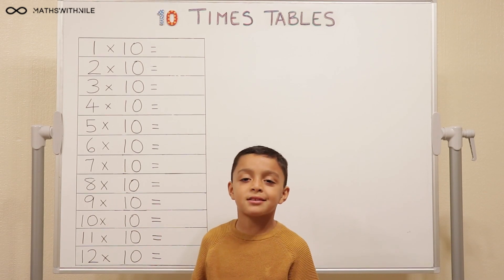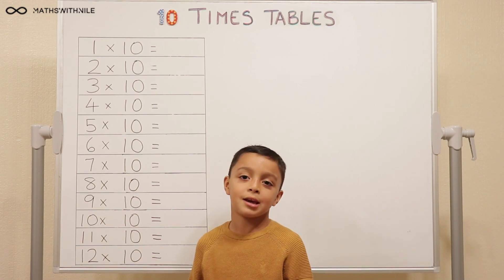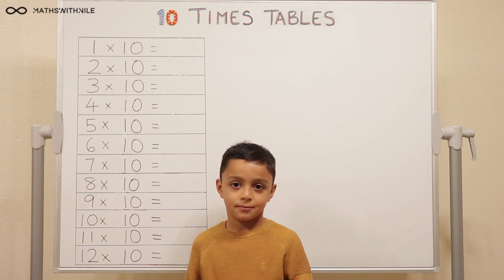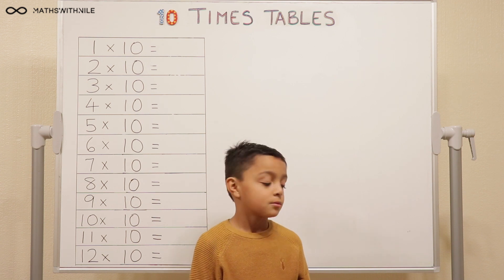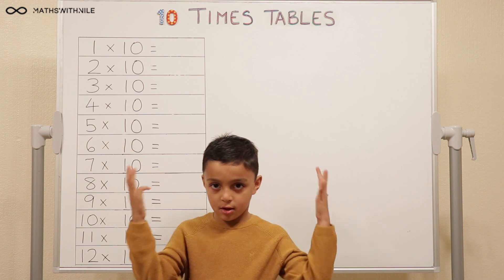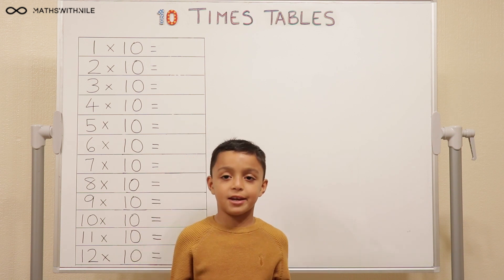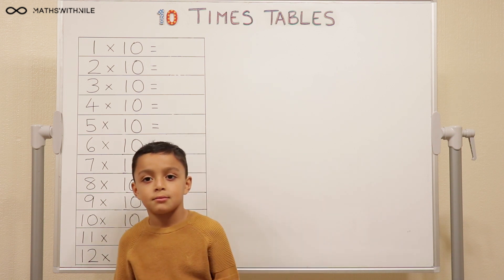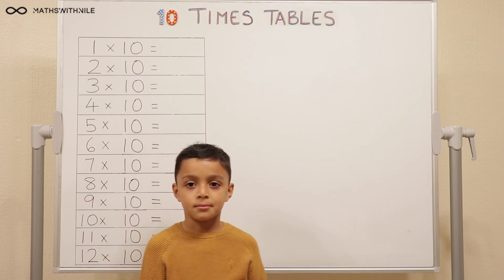Hello, welcome to Maths with Niall. Today we're doing our 10 times tables. Hi Niall, what are you going to use to help you work out your 10 times tables? My fingers. So one finger equals 10 altogether. Okay, so you're going to be counting up in 10s using your fingers.